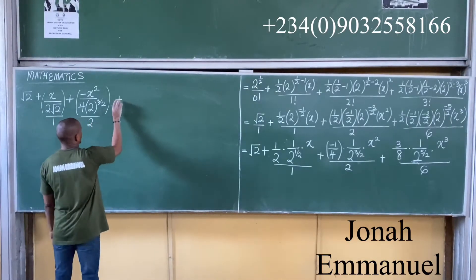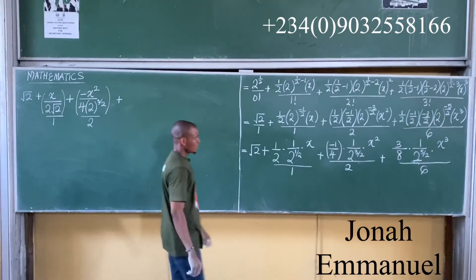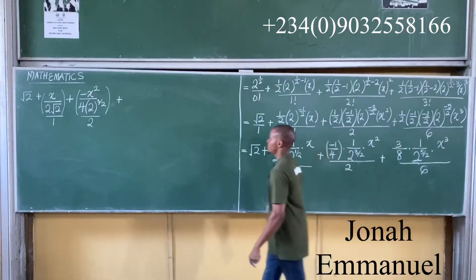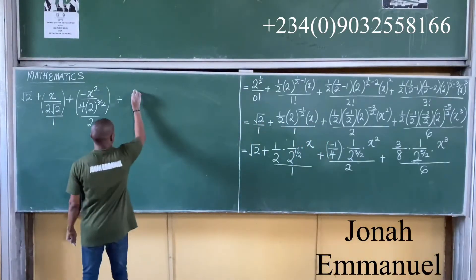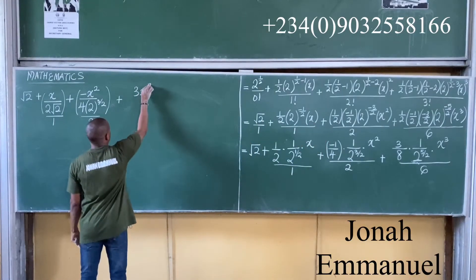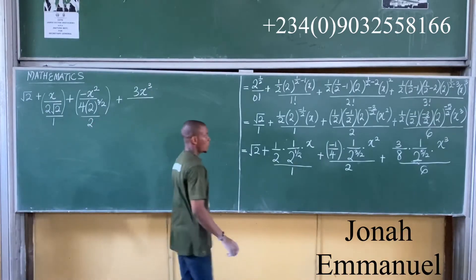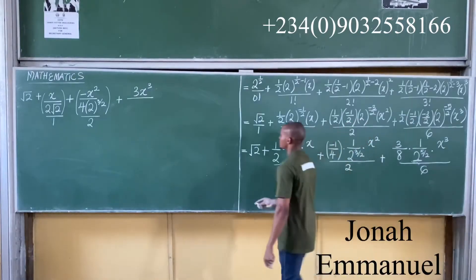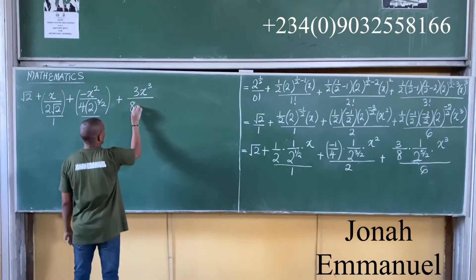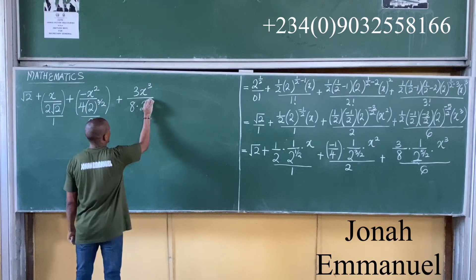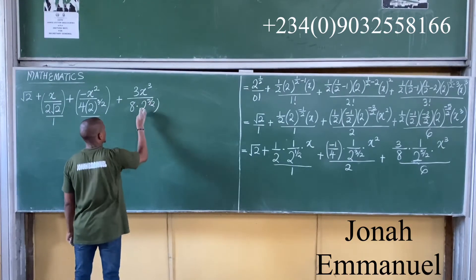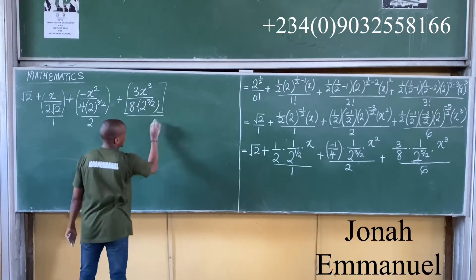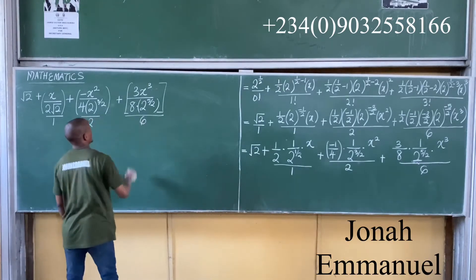Next I am having: 3 times 1, that's 3 times x cubed, giving 3x cubed. All over — work on this — it becomes 8 times 2 to power 5 over 2. So here is my numerator, all over 6.